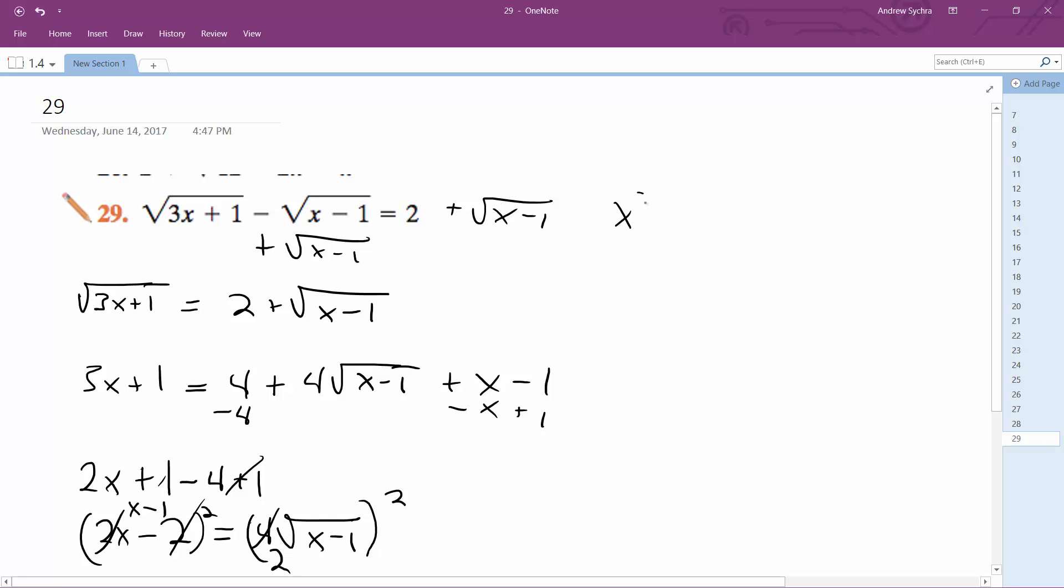So I get x squared minus 2x plus 1 is equal to 4 quantity x minus 1. So I get x squared minus 2x plus 1 is equal to 4x minus 4.